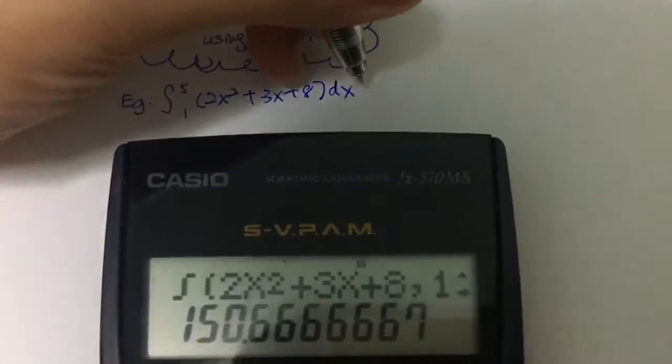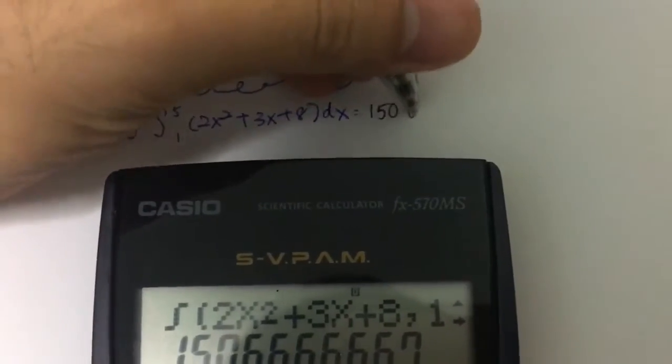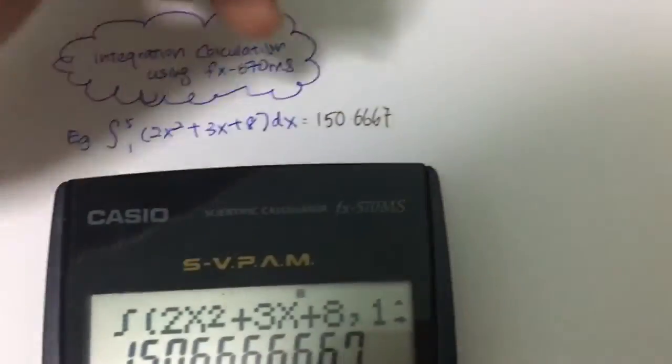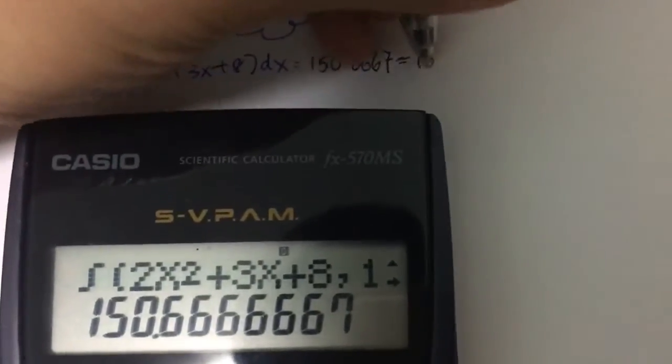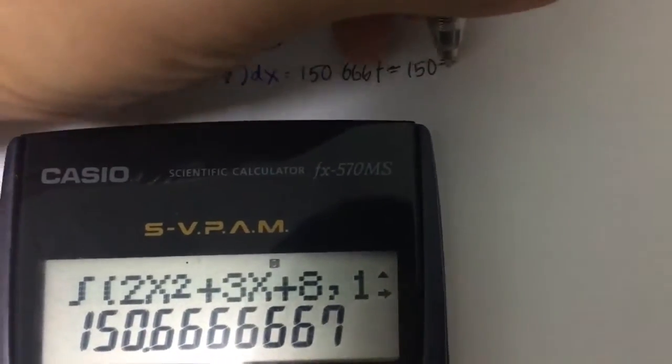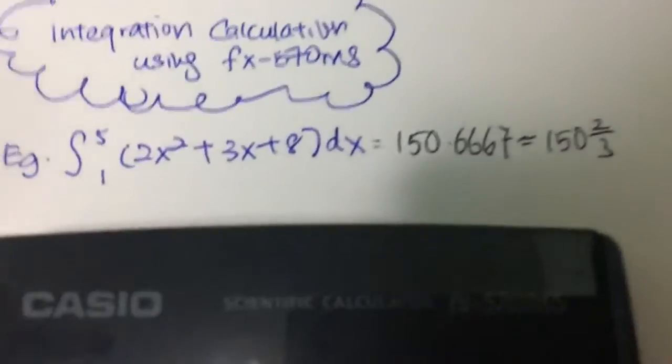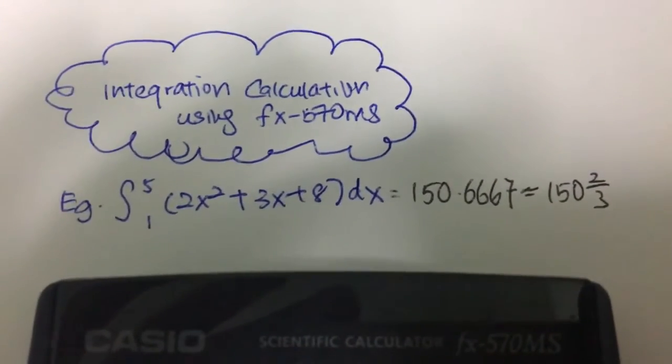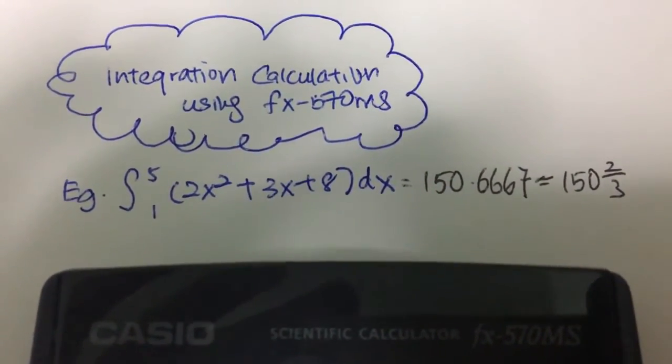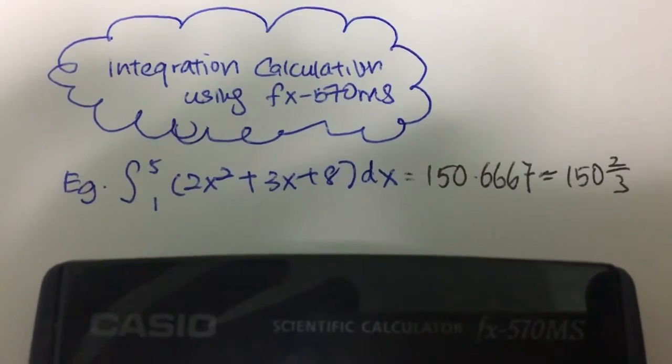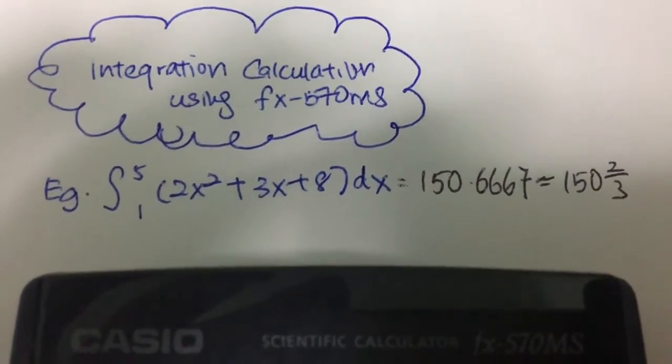This equals to 150.6667, so possibly equals to 150 and 2/3. That's it. It is very simple using the calculator FX-570MS to do integration.